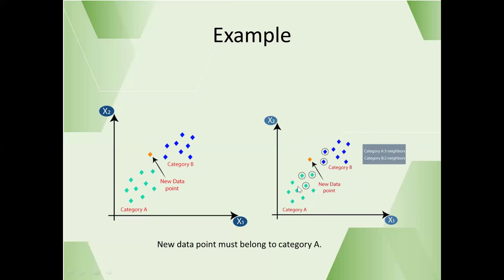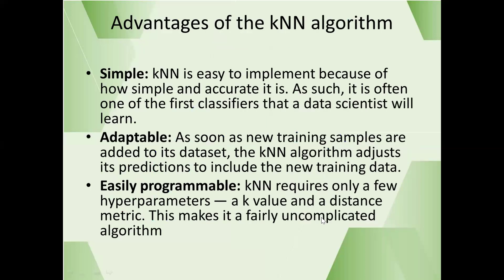Among the 5 closest neighbors, 2 belong to category B and 3 belong to category A. Clearly, category A points are very close to the new point compared to category B. So the suitable category for the new data point is category A, as the majority of the nearest neighbors belong to category A according to the k-nearest neighbor algorithm.